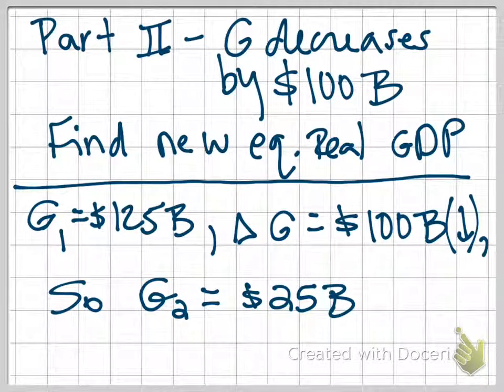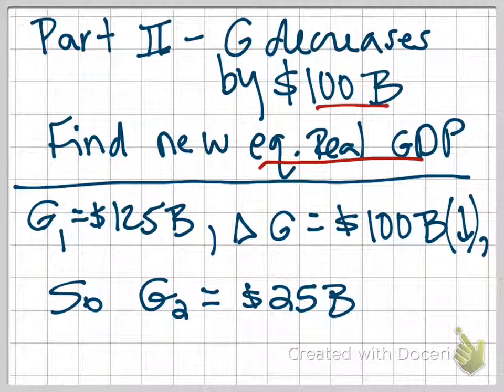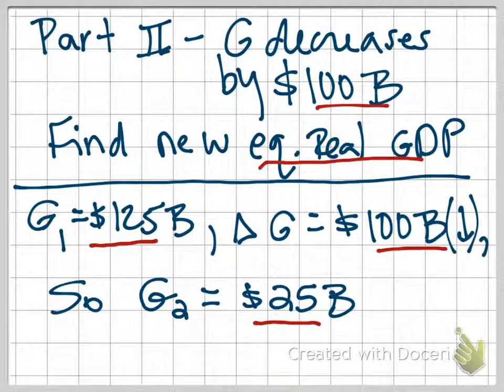In part two of the problem, we're told that government purchases are going to decline by $100 billion. So we have this decrease of $100 billion, and we're asked to figure out the impact this would have on production. We're asked to find the new equilibrium real GDP. If you're recalling back to this chapter, the aggregate expenditure model, this is saying we have a decrease in government spending. This would shift our aggregate expenditure model down, and so we would go to a lower level of production. We have to figure out what that new level of production is.